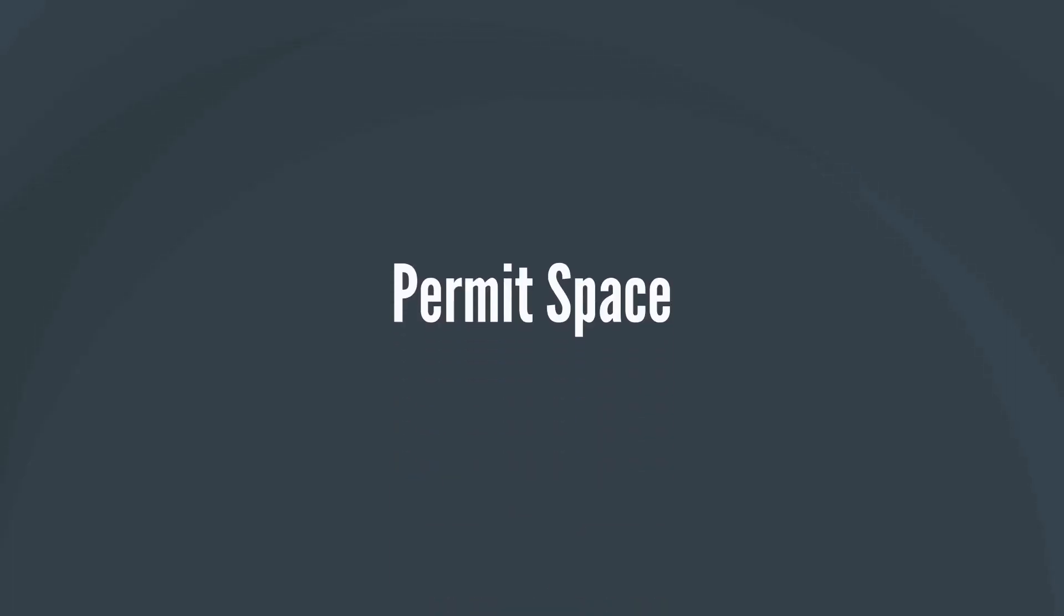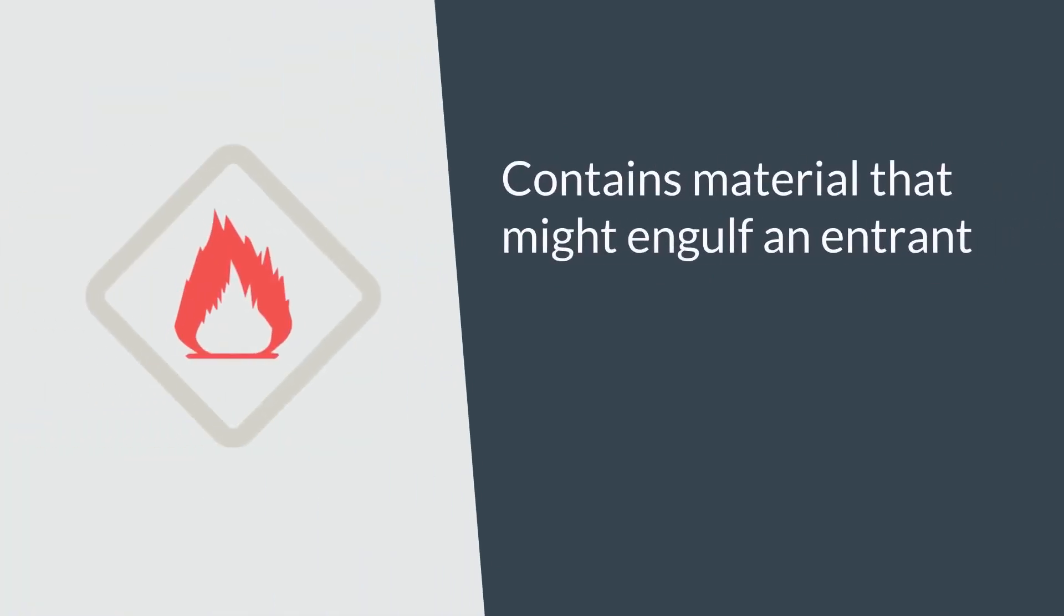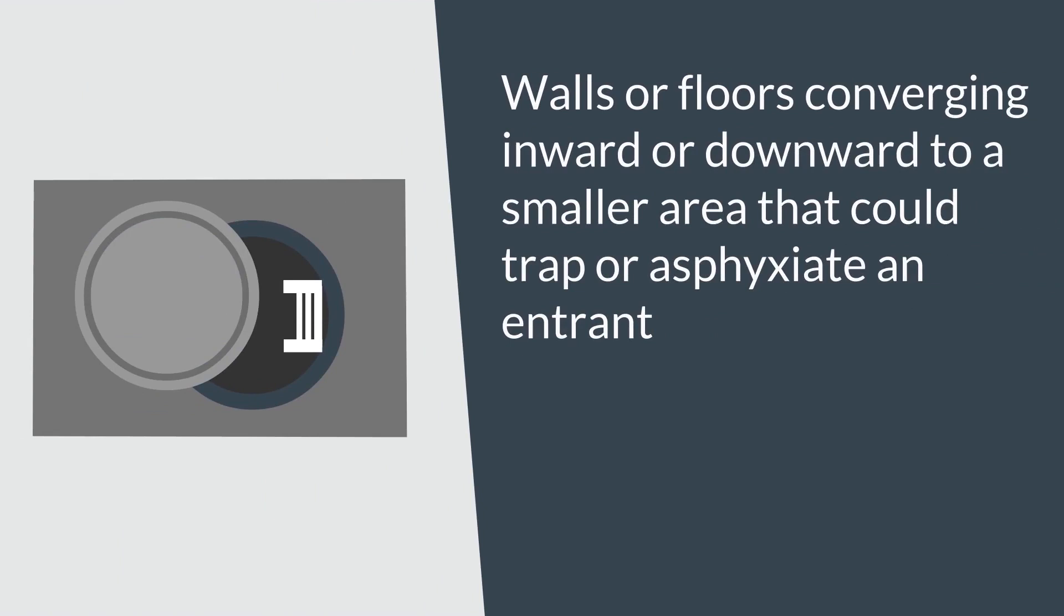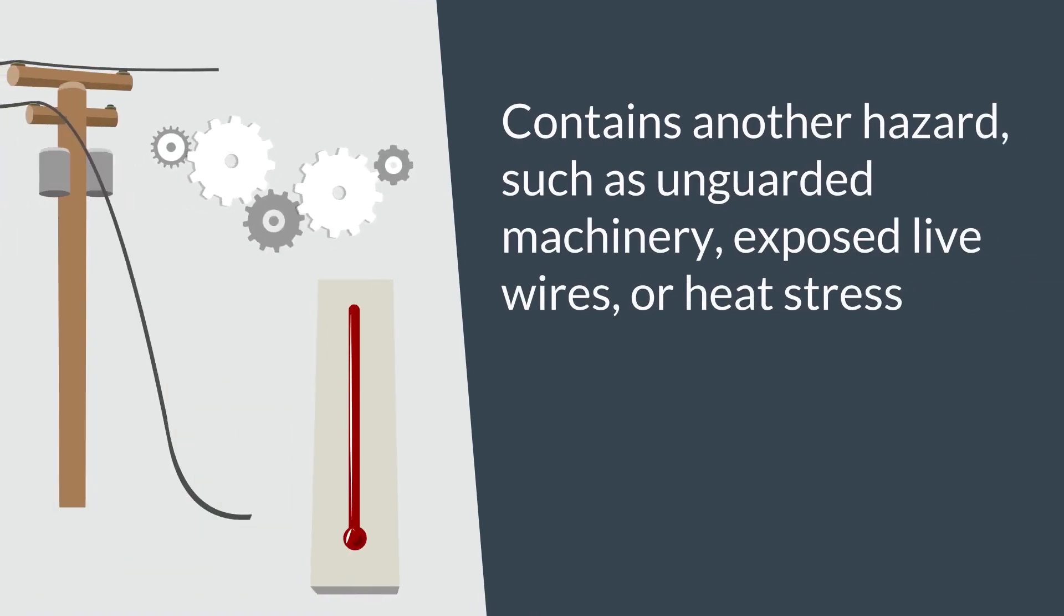Permit space. A permit-required confined space has one or more of these characteristics: contains or has the potential to contain a hazardous atmosphere, contains material that might engulf an entrant, walls or floors converging inward or downward to a smaller area that could trap or asphyxiate the entrant, or contains another hazard such as unguarded machinery, exposed live wires, or heat stress.